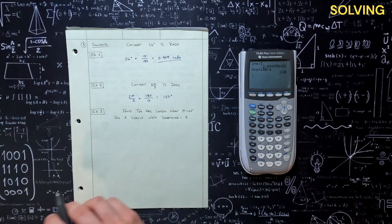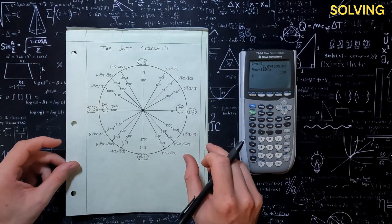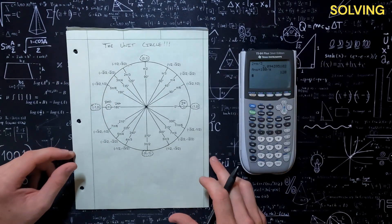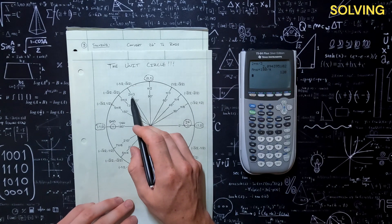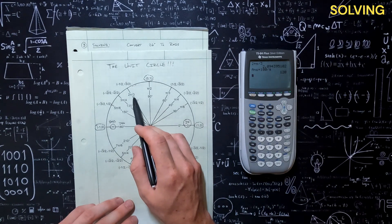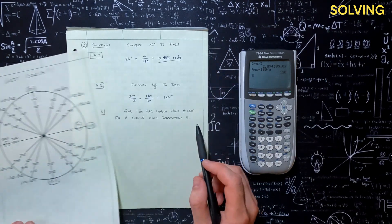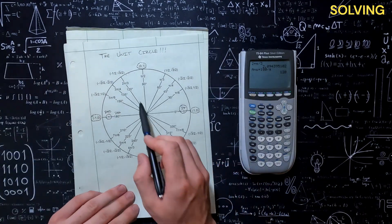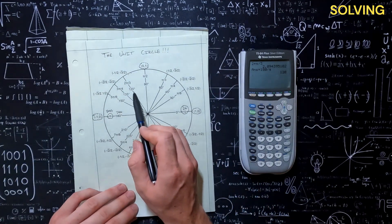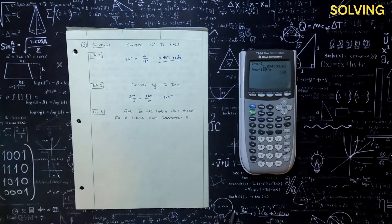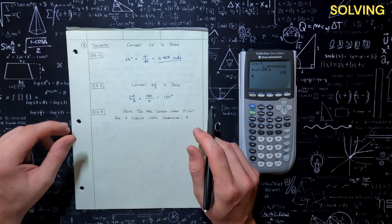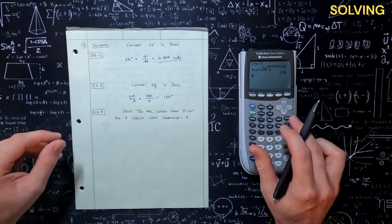And we can actually check that. We come back to the unit circle, and we were given 2π over 3. We typed that into the calculator and got 120 degrees — so we can check that off and are pretty confident with that answer.